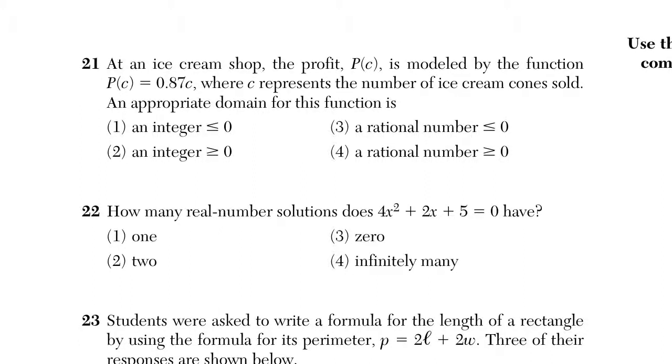Okay, in the last page of multiple choice, we're looking at question 21. So it says, at an ice cream shop, the profit p of c is modeled by the function.